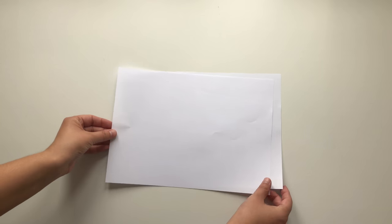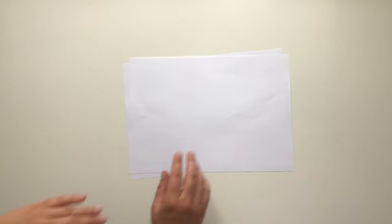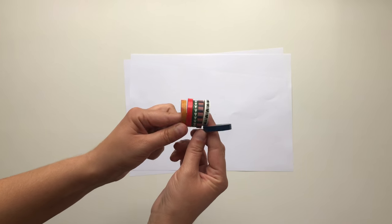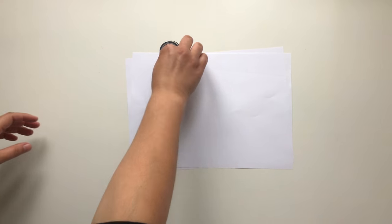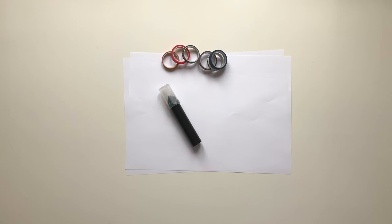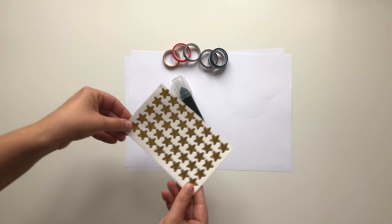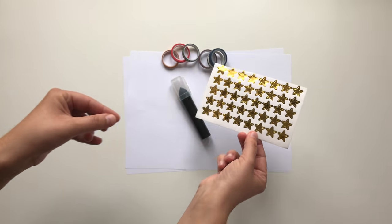You need a piece of paper, paper tapes in different colors - I got mine from Tiger - a pen, star stickers. I chose gold stickers and you will also need scissors.